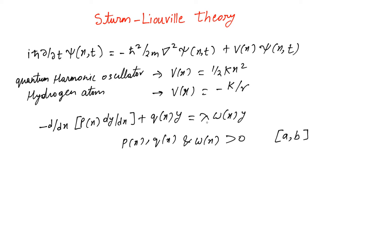And lambda is an eigenvalue of this equation. So for different lambdas we actually get different y's. y is a dependent function, so for different lambdas we get different y's and these lambdas are actually called the eigenvalues and the corresponding y are called the eigenfunctions.